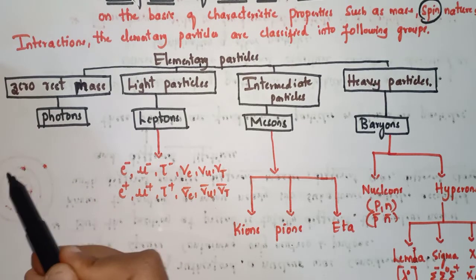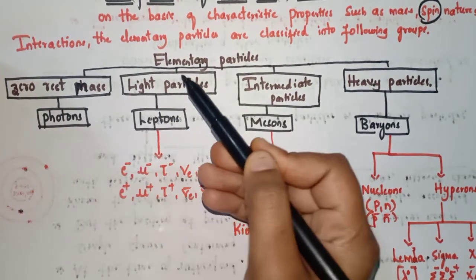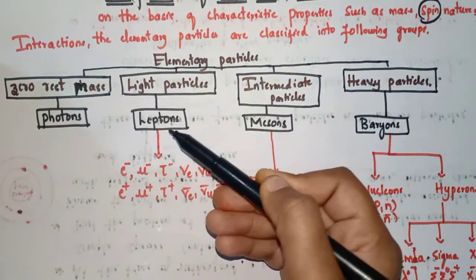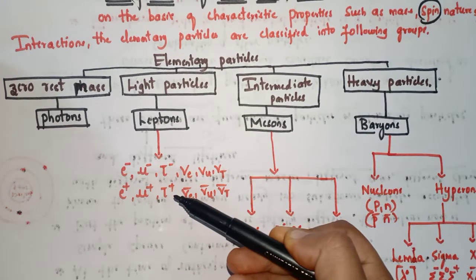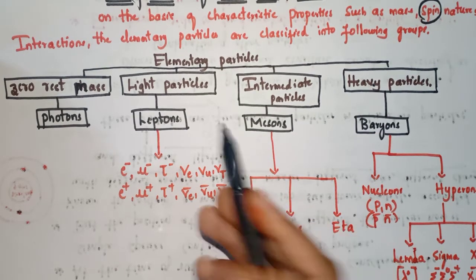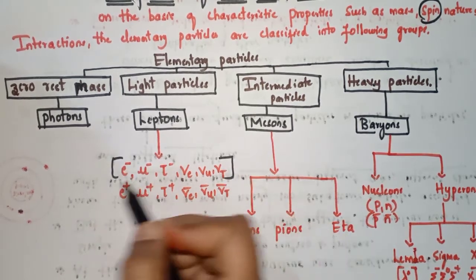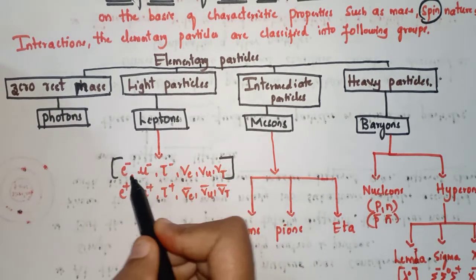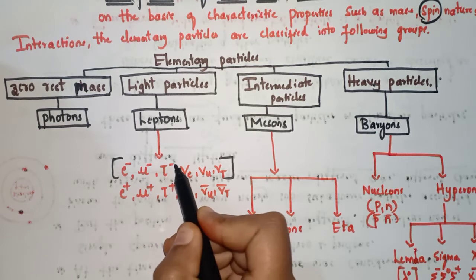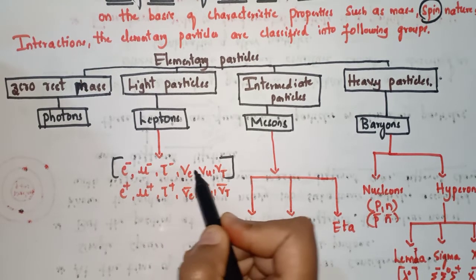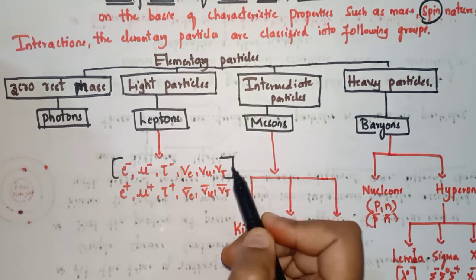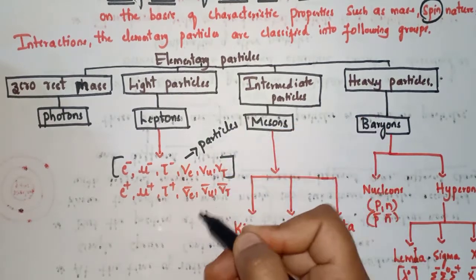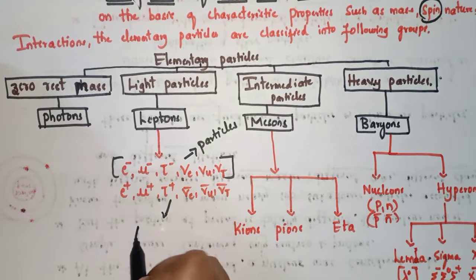Under zero rest mass particles we have photons. Light particles are called leptons. Intermediate particles are called mesons. Heavy particles are called baryons. Photons are not classified further. Light particles are classified into leptons, which are further classified into twelve types — six particles and six antiparticles. The six particles are: electron (e−), mu minus, tau minus, electron neutrino, mu neutrino, and tau neutrino.